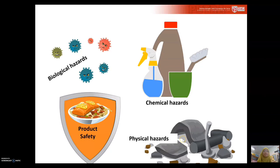There is also physical hazard. Physical hazard can happen from the wear and tear of the equipment. It can also come from the operator — for example, from misconduct during processing or careless mistakes.